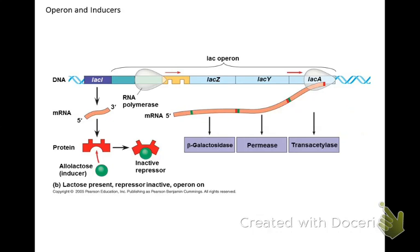From operons: they're in prokaryotes and they control transcription. A repressor is a molecule that stops transcription by binding to the operator. An inducer is a molecule that binds to the repressor and turns the repressor on. Your notes say this is negative feedback.